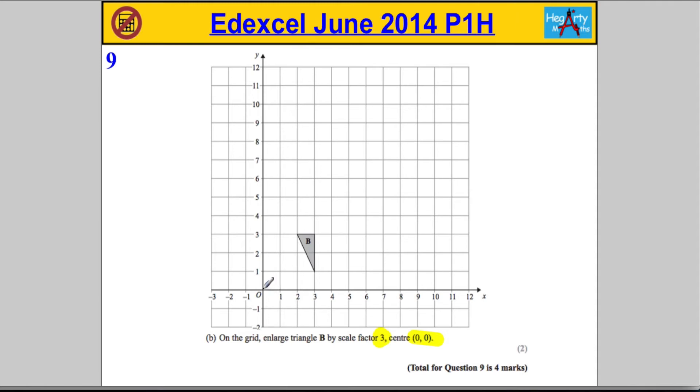If I start at the center (0,0) and I want to get to this vertex, I need to decide how do I get there - I go one, two, three to the right and one up. So I went three right and one up. Now if I need to enlarge by a scale factor of three, I'm going to go nine to the right and three up. Nine to the right is going to be here, one two three up is going to be here.